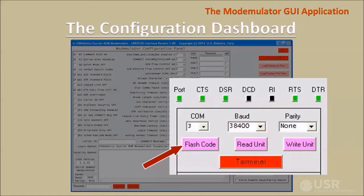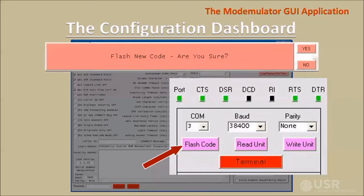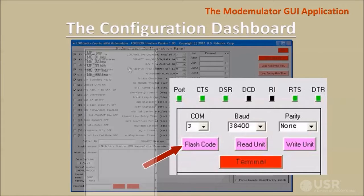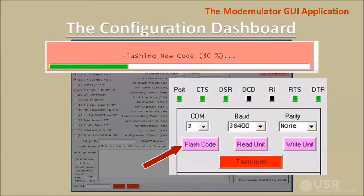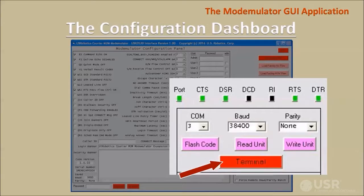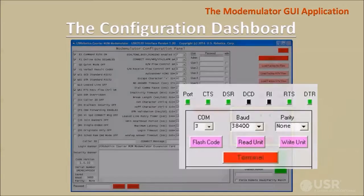This button provides a simple means of updating a modemulator's firmware. Click it and a confirmation prompt will appear. When the yes button is clicked, a list of firmware files in the GUI's hex subdirectory will appear. Simply point to and click the desired firmware file. The GUI will then automatically replace the modemulator's current firmware with the selected firmware file. This button switches the GUI into terminal mode — later in this video, we'll take a tour of terminal mode.